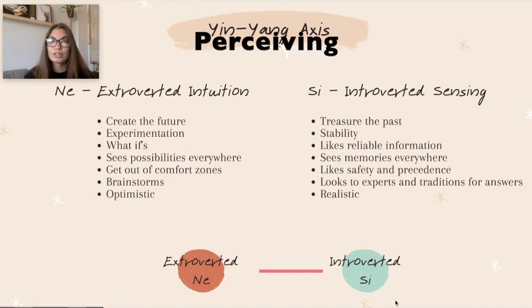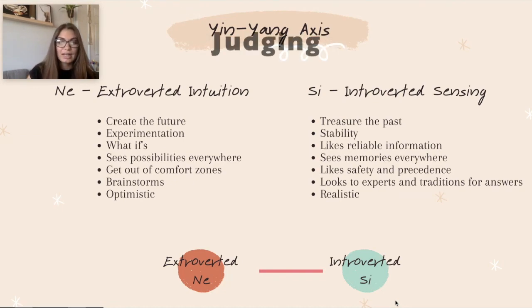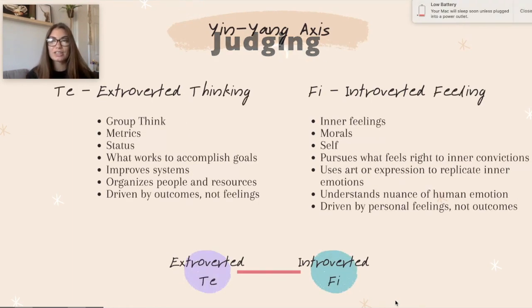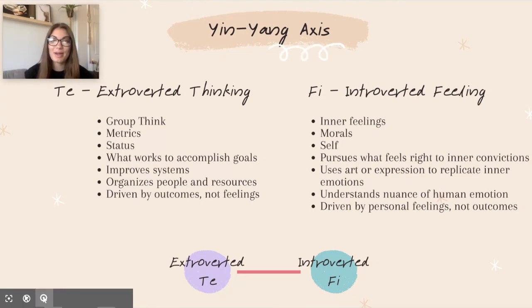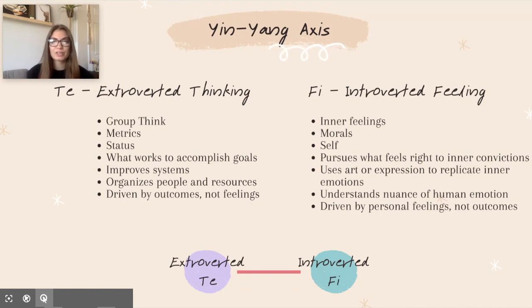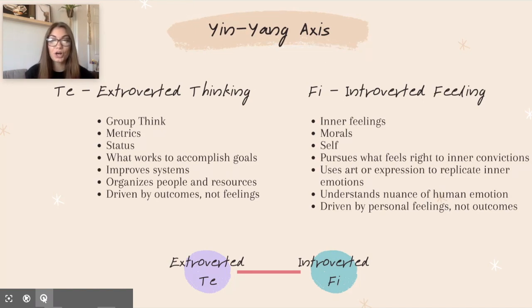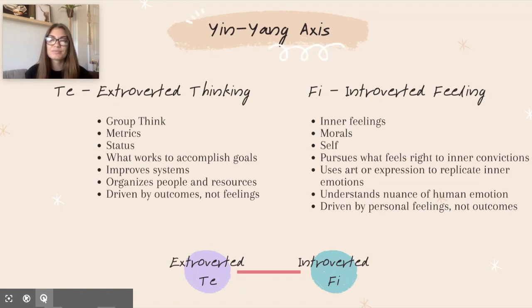Now let's move to the two decision-making axes. The first is extroverted thinking (TE) paired with introverted feeling (FI). TE is about group think — what does the group think is best? FI is about your inner feelings. TE focuses on metrics, numbers, time; FI is about morals. TE can be about status; FI is about self. TE improves systems; FI uses art or expression to replicate inner emotions. TE organizes people and resources; FI understands the nuance of human emotion. TE is driven by outcomes, not feelings; FI is driven by personal feelings, not outcomes.